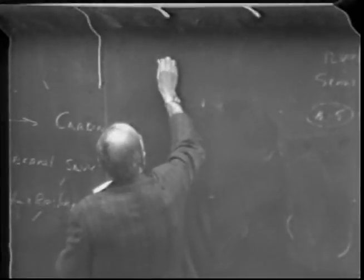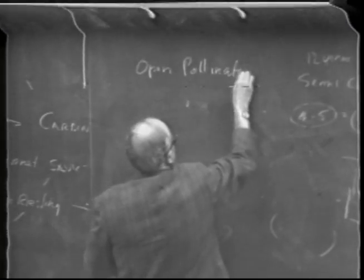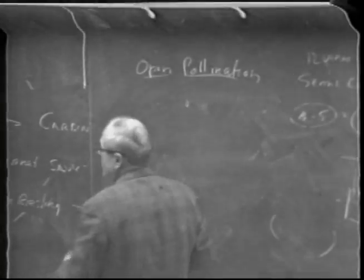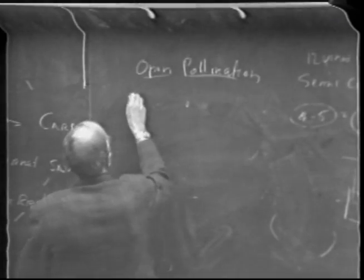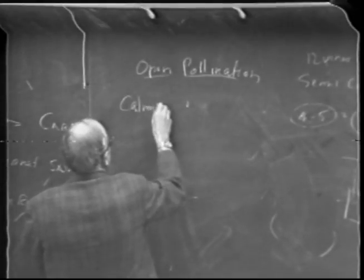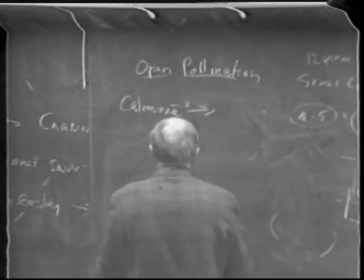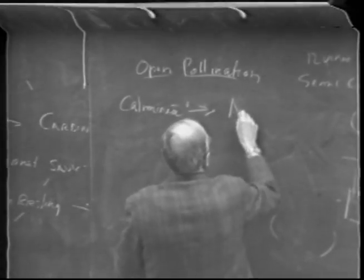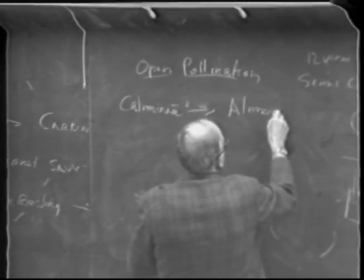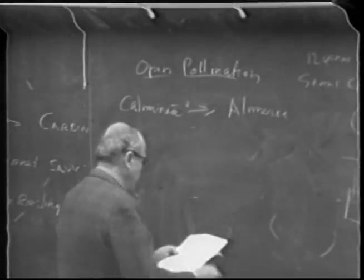There has been one development by open pollination — this is also crossing, but not a controlled cross. You've heard of the variety Calmeria. The USDA planted seeds of Almeria, selected one superior seedling out, and named it Calmeria.